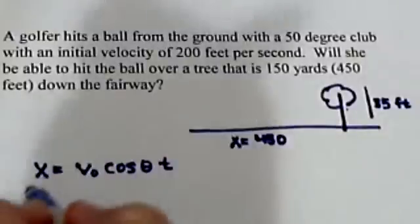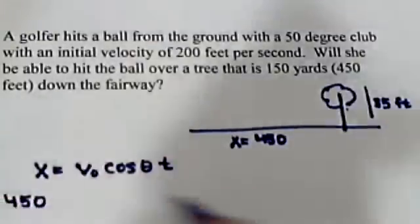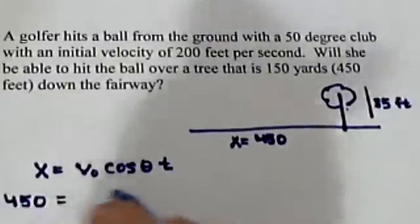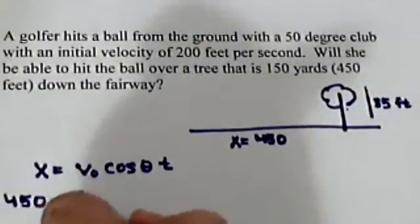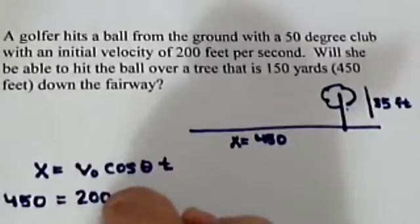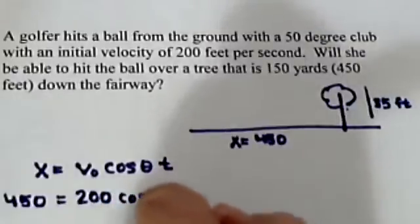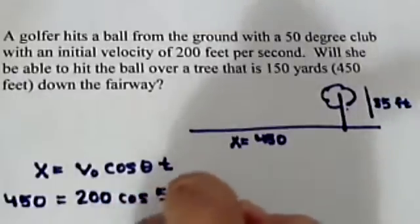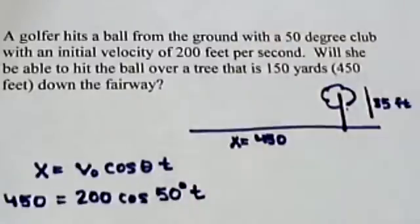We know x is going to be 450. We know the initial velocity is 200. We have theta being 50 degrees, and then we're going to solve this for t.